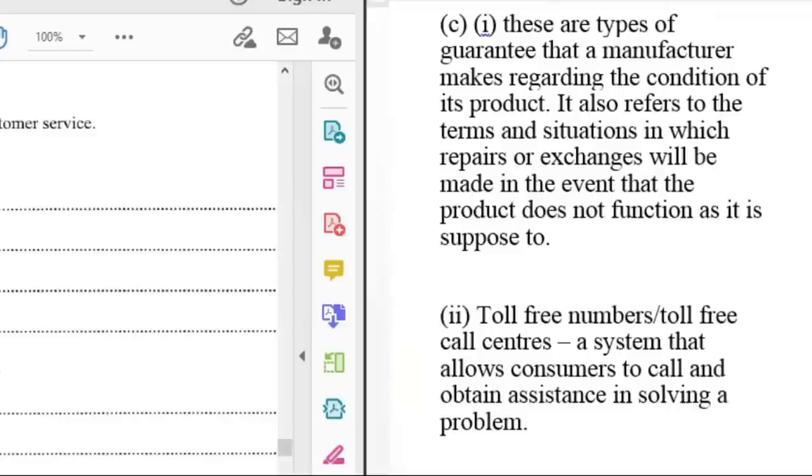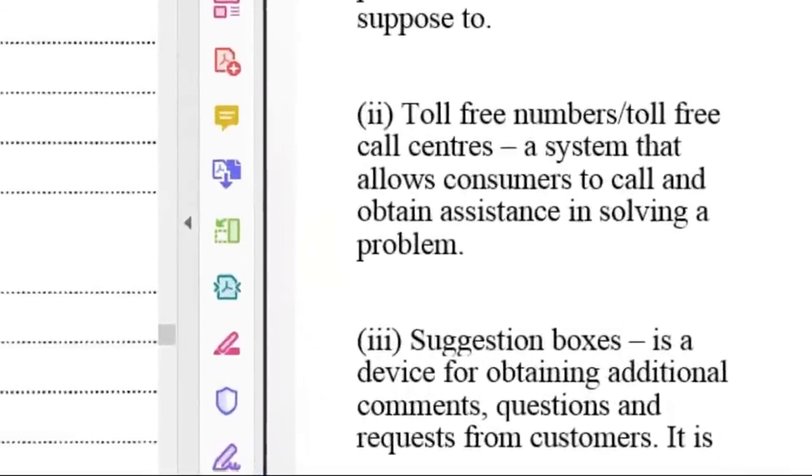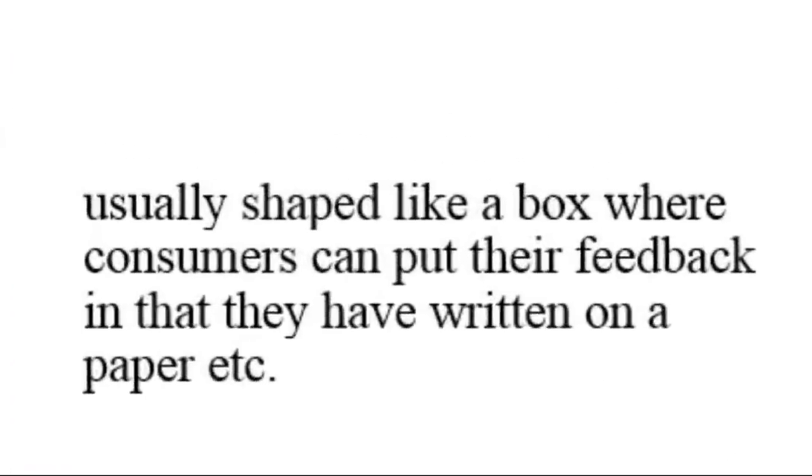Toll-free numbers or toll-free call centers is a system that allows customers to call and obtain assistance in solving a problem. Suggestion boxes are a device for obtaining additional comments, questions, and requests from customers. It is usually shaped like a box where consumers can put their feedback in that they have written on a paper.